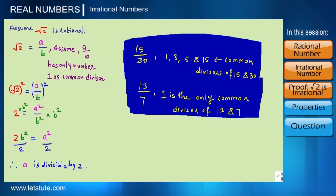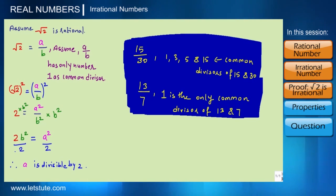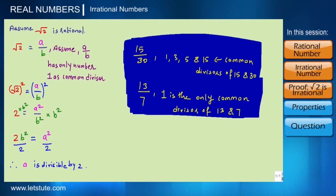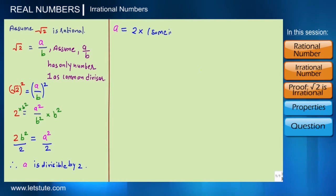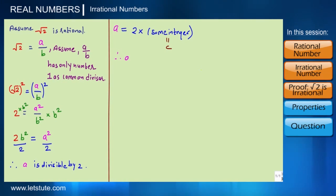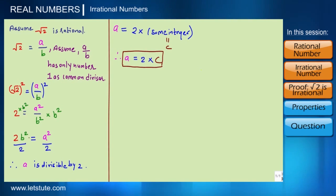Note that b² itself is not divisible by 2, but 2 × b² is divisible by 2, so a is divisible by 2. Now let's try to show b is also divisible by 2. Since a is divisible by 2, a must be some multiple of 2, i.e., a = 2c for some integer c.